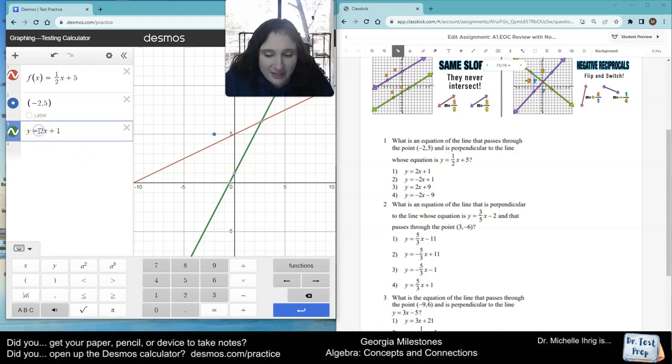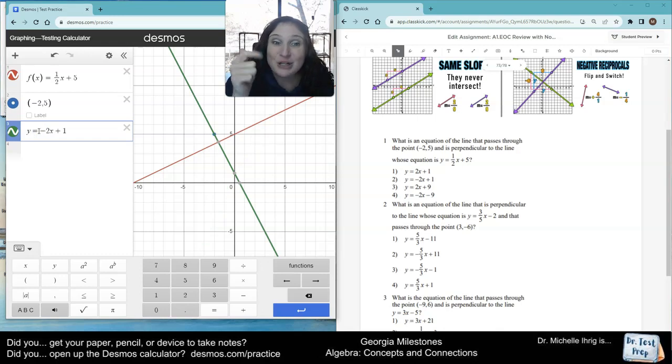So, now I'm going to do negative two x plus one. Right angle, blue dot, correct answer is number two.